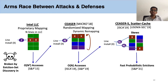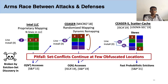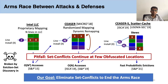Thus, even this defense was broken. The main reason why these defenses are broken is because they continue to have set conflicts at few locations. So despite the obfuscation, there is always an opportunity for an adversary to discover these locations and launch conflict-based attacks. The only fundamental way to eliminate conflict-based attacks is to eliminate set conflicts, which brings us to our goal.